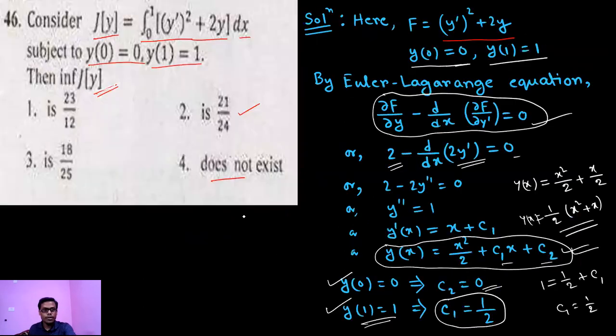23 by 12. So in option 1, we are given 23 by 12. So option 1 is correct.